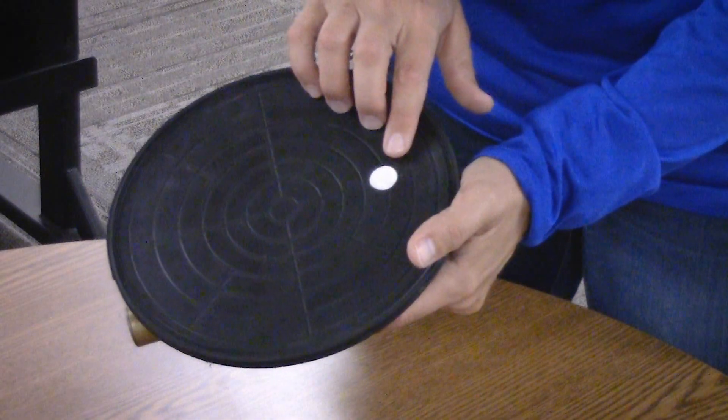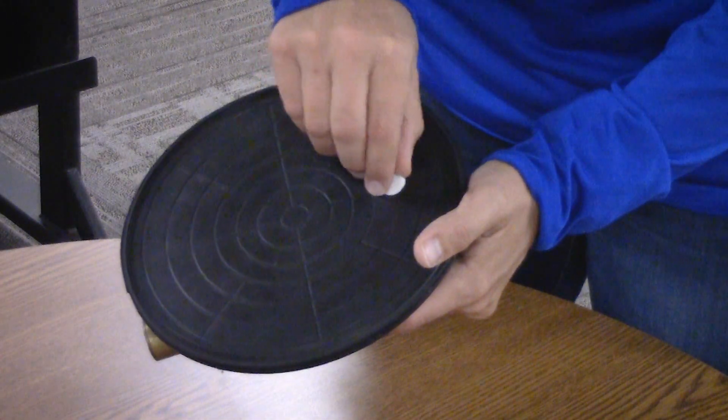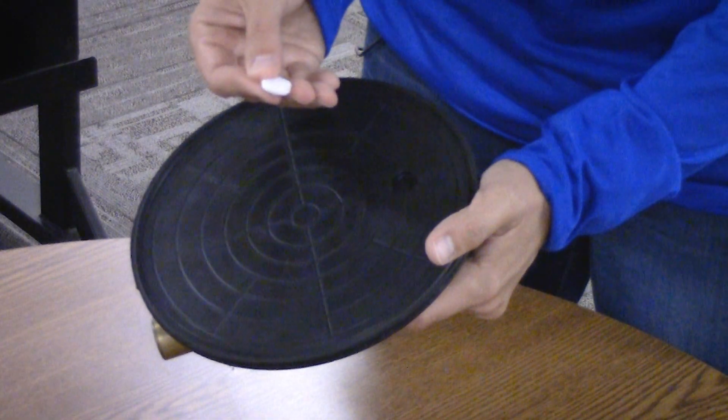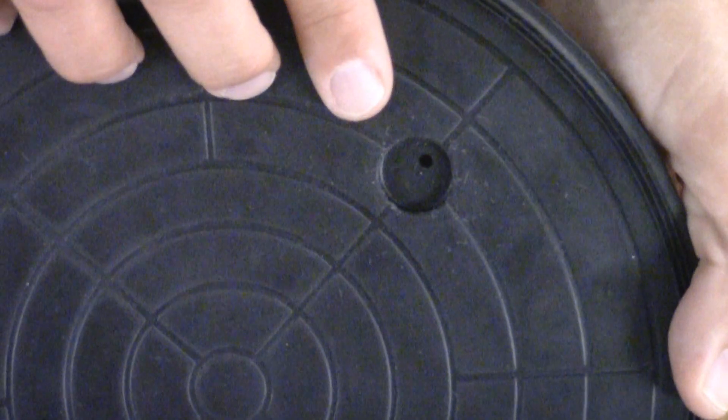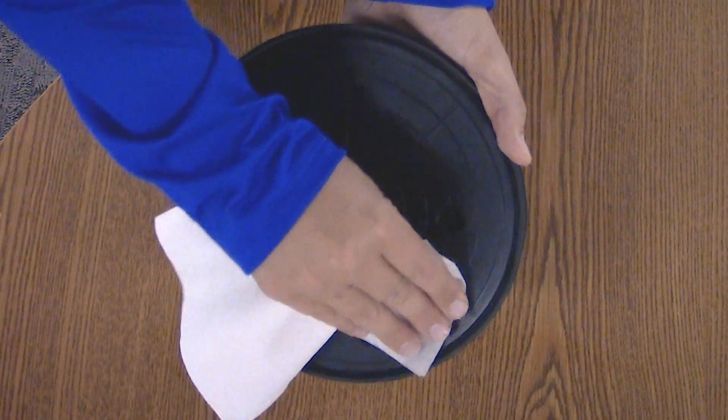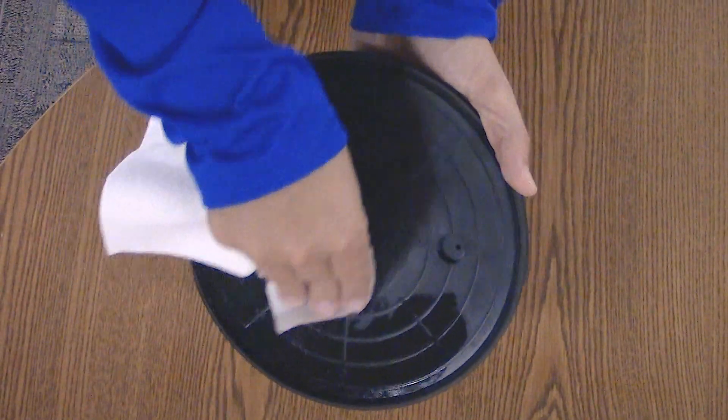To clean the pad, you should first remove the felt filter so that it doesn't become saturated with water. It's also important not to get water into the suction hole found under the pad filter. Using a wet soapy rag, wipe the pad face down.